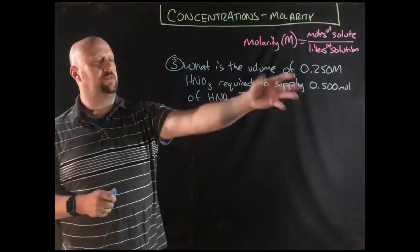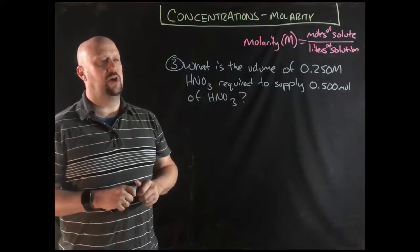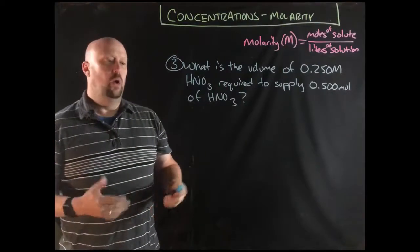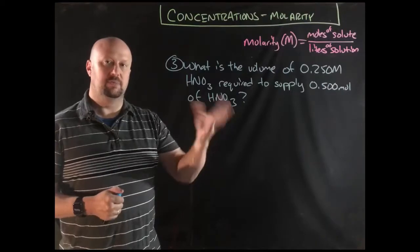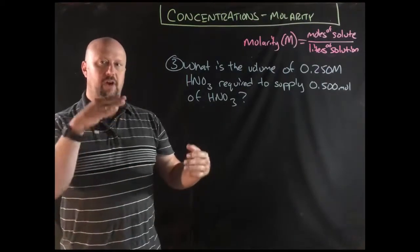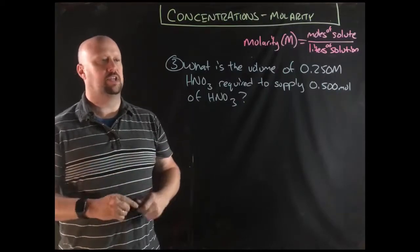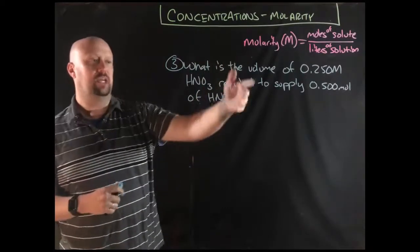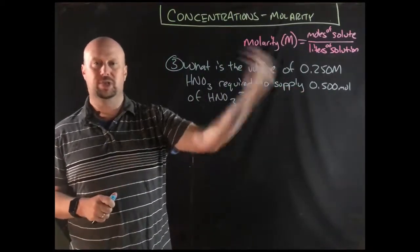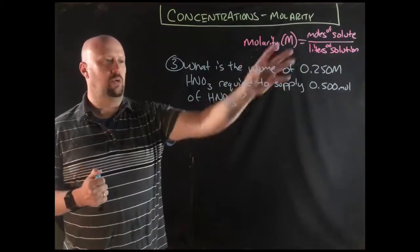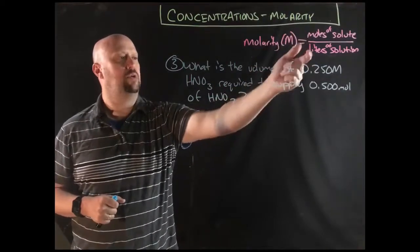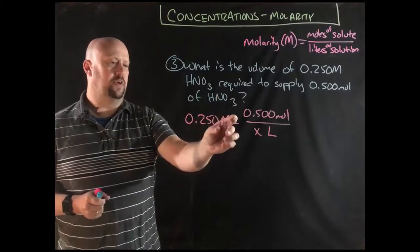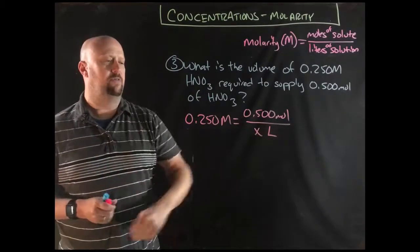For problem number three, what is the volume of a 0.250 molar nitric acid required to supply 0.5 moles of that nitric acid? What that is likely an example of is some sort of titration problem where you're trying to figure out an equivalent number of moles or a certain number of moles that you're trying to neutralize or something like that. Very often though, you would do the experiment, you would get the volume and you would try to determine the moles sort of like we did in the last problem. But I wanted you to see one work each way. I have molarity, I have moles, I need to solve for volume.